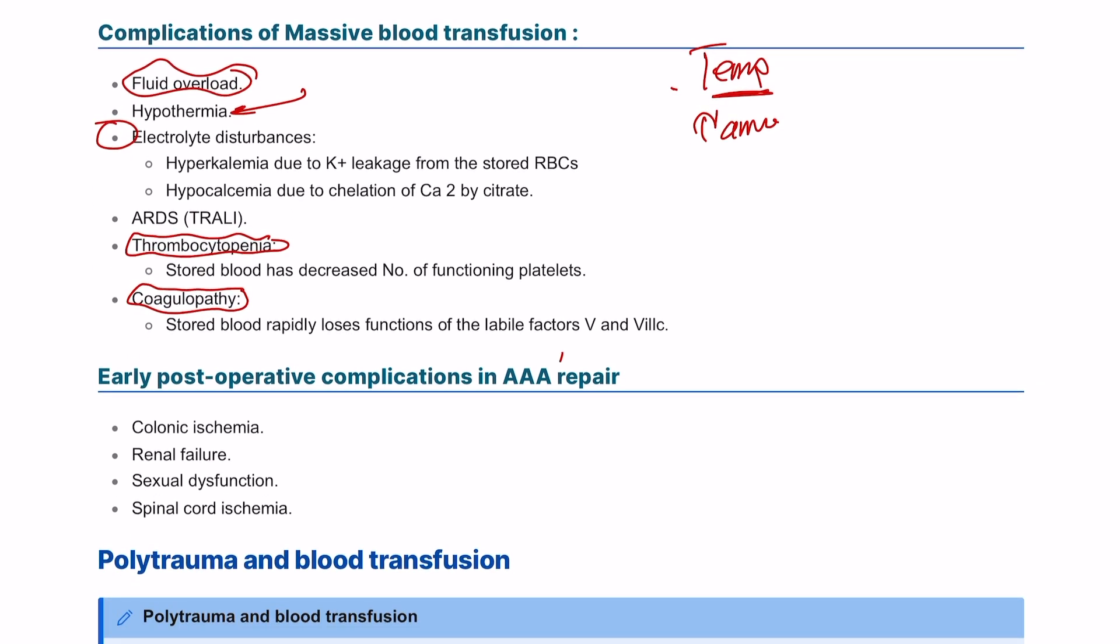The complications that happen due to AAA repair: if you have an aortic aneurysm and you've done a repair, the aortic blood supply to the kidney might lead to renal failure, to the spine might lead to spinal cord ischemia, and sexual dysfunction and colonic ischemia as well.